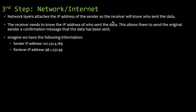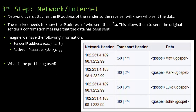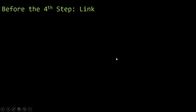Imagine we have the sender IP address — an IPv4 address — and the receiver IP address. Looking at the example, we can see it's going to use port 60. We have the sender IP address, the receiver IP address, and the network header. In the transport header, we have the packet numbers along with the port.